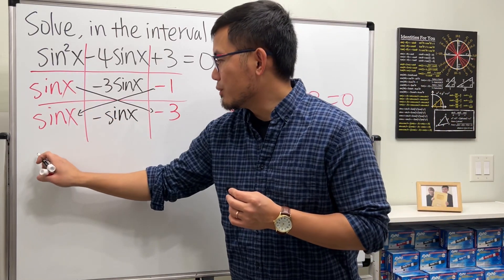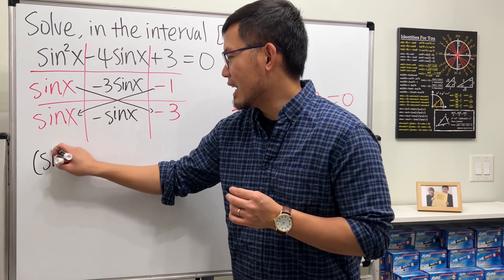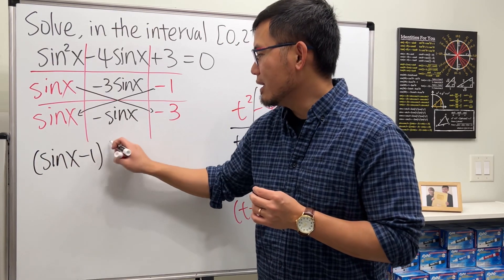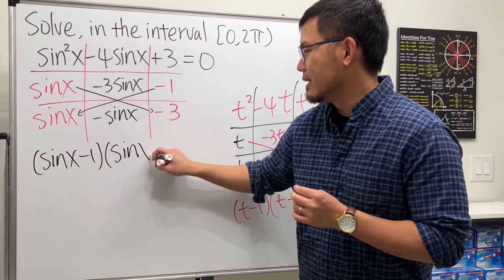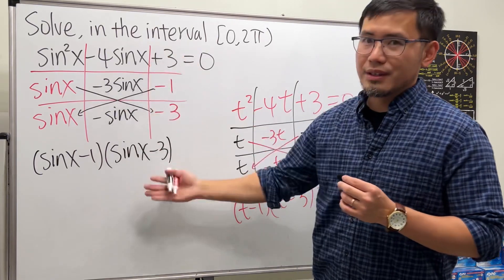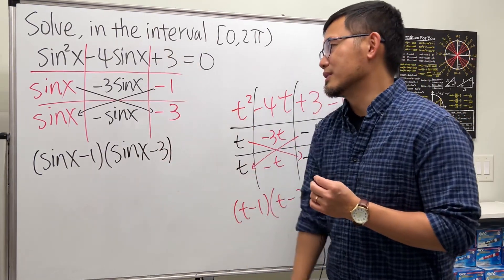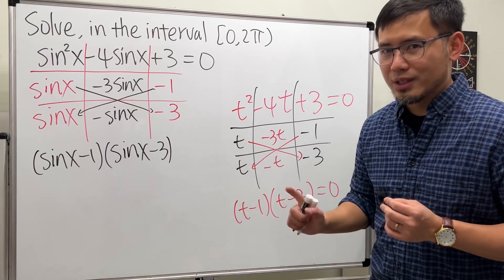Therefore the factoring is sine x minus 1 times sine x minus 3. So that's the main question: how do we factor this quadratic equation in terms of sine? But let's solve this trig equation of course.